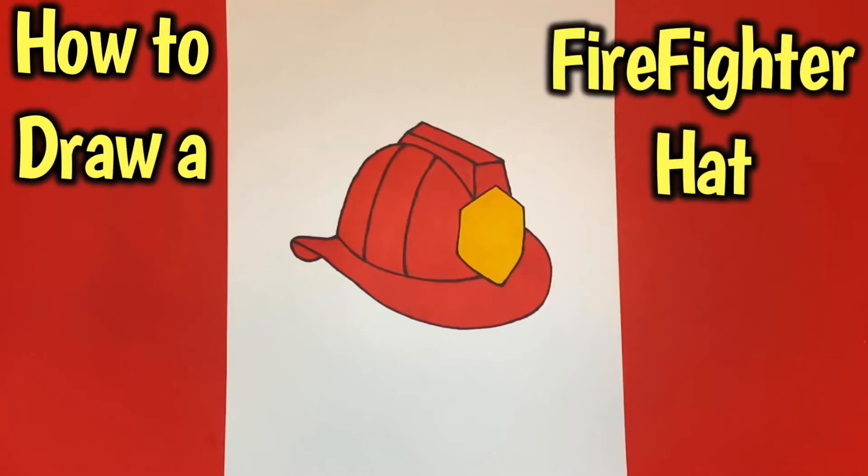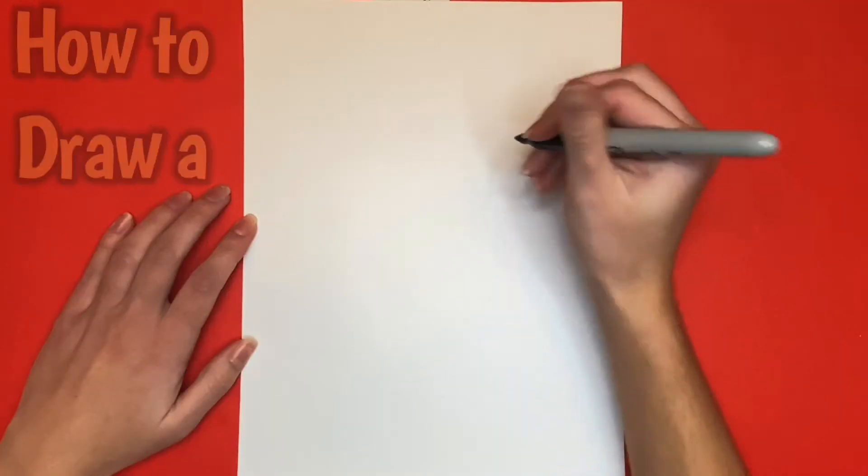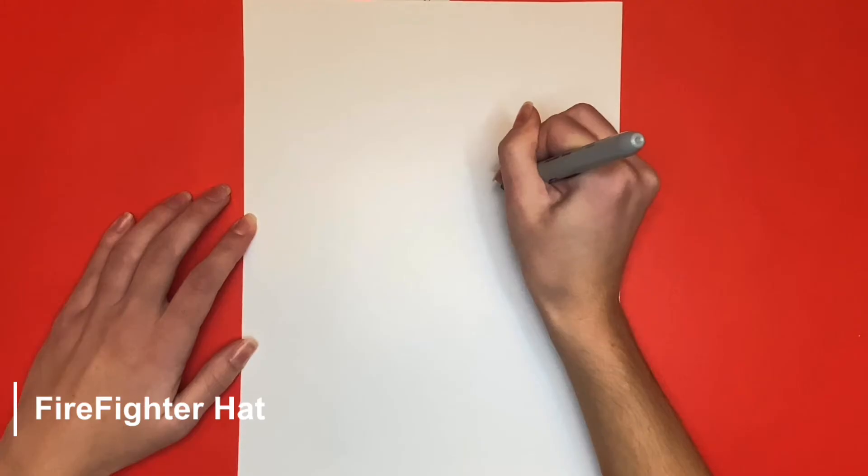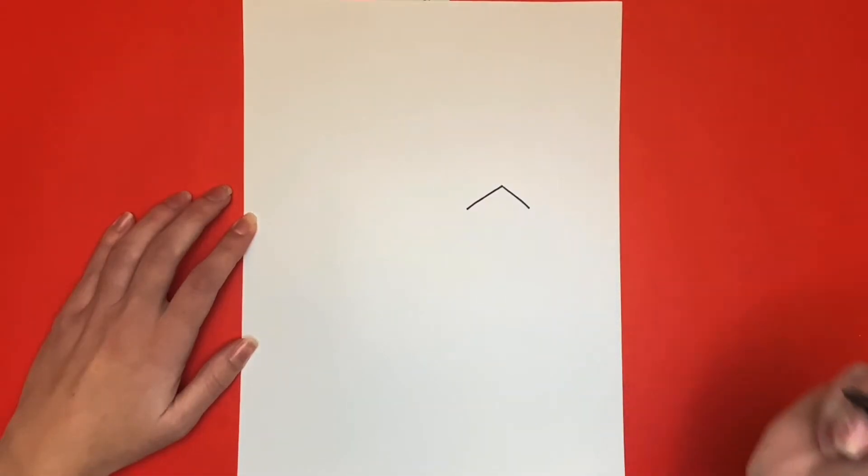How to draw a firefighter hat step by step. We're going to start by drawing a wide upside-down V-like shape. Then on each side of this V-like shape we're going to draw a straight line going downwards.